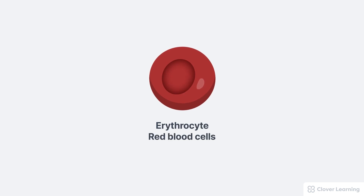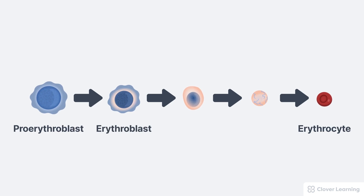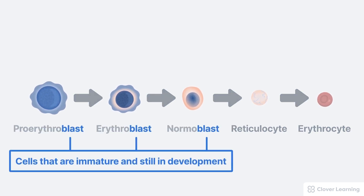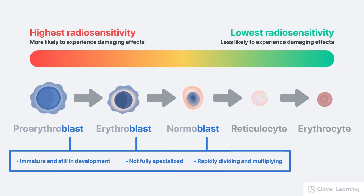We'll use red blood cells called erythrocytes as an example. A red blood cell goes through several stages of development before it actually becomes a red blood cell in circulation. They start as proerythroblast, then become erythroblast, then normoblast, next they mature into reticulocytes which may enter blood circulation, and finally they become an erythrocyte, a fully mature red blood cell. The suffix 'blast' refers to cells that are immature and still in development — not fully specialized and rapidly dividing. These immature blood cells are all very radiosensitive and very prone to death and mutation from radiation exposure.